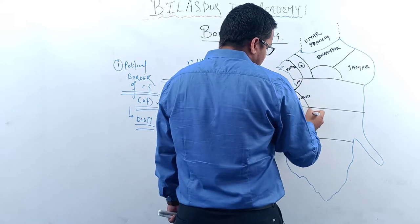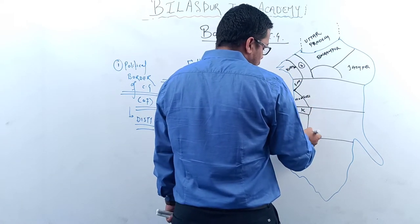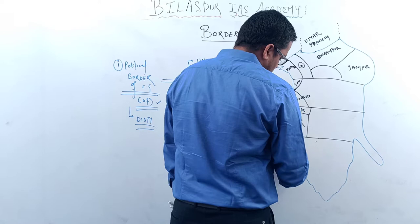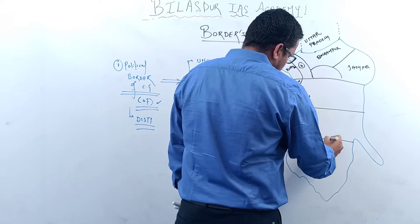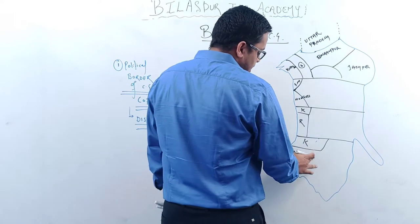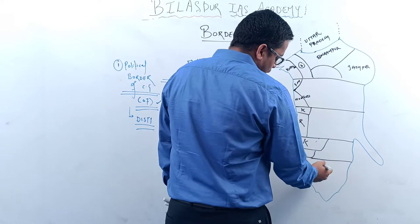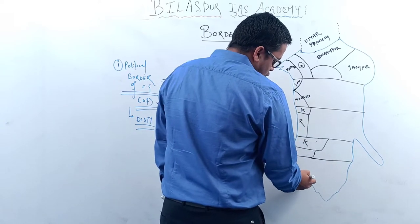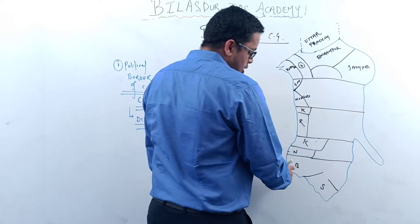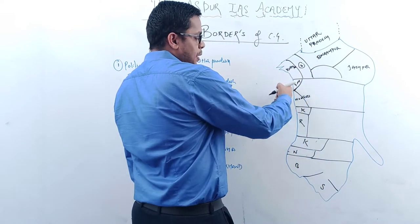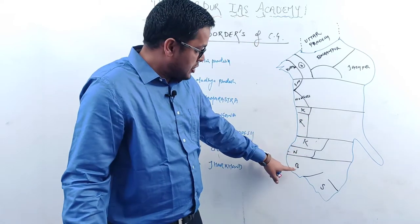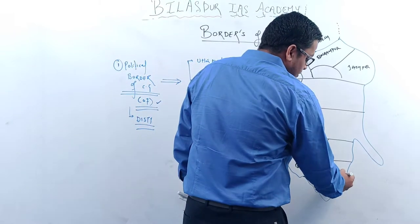Below Mungeli we have Kavardha or Kabir Dham. Below Kabir Dham we have Rajnandgaon, which makes the border. Below Rajnandgaon we have Kanker making the border. Below Kanker, Narayanpur again makes the border. After that we have Bijapur making the border. Below Bijapur we have Sukhma, which also makes the border.